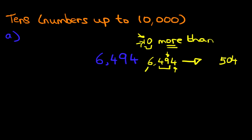49 counting forwards by 1 is 50. As for the 1,000, the 6, well that doesn't go forward by anything. So that remains as it is. And it's as simple as that. We have our answer. 10 more than 6,494 is 6,504.